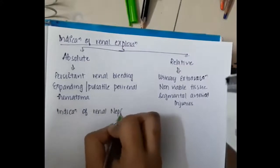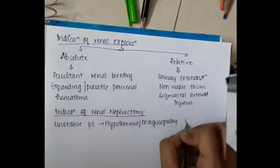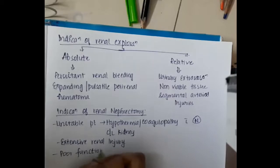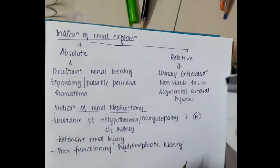Indications of renal nephrectomy: In an unstable patient, if we see presence of hypothermia or coagulopathy with normal contralateral kidney, then we should do renal nephrectomy. If there is either extensive renal injury or presence of poor functioning hydronephrotic kidney, we should do renal nephrectomy. This is about the important points about renal nephrectomy.